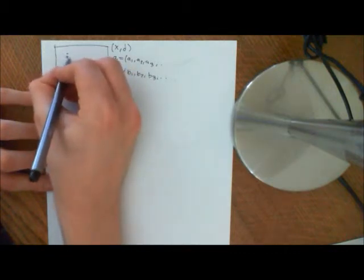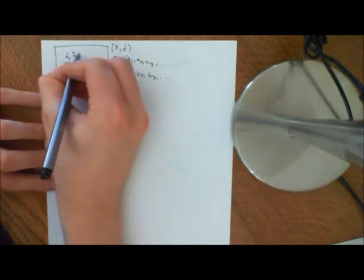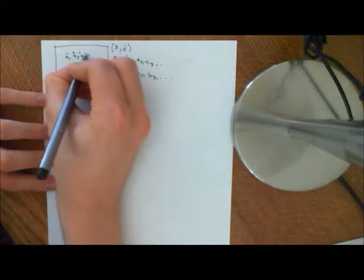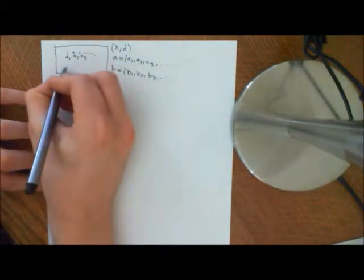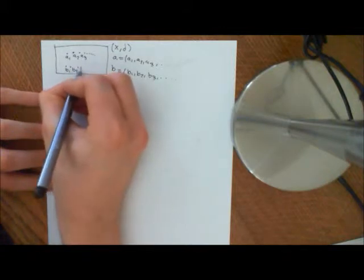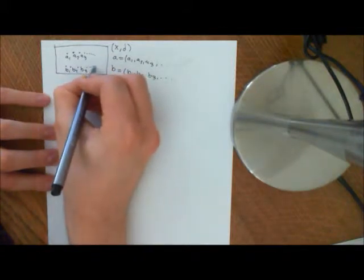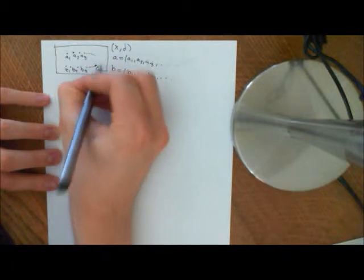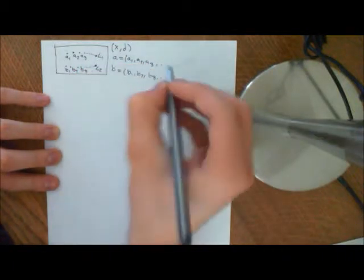Okay, and we have some sequences, and these obviously have this picture in the metric space. And here we have our sequence b1, b2, b3, and they might converge on another limit. So let's say this is l2, and this is limit l1.